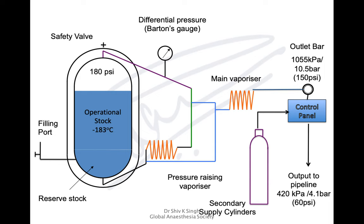The gases pass through a main vaporizer at very high pressure — around 1,055 kPa, 150 psi, or 10.5 bar — then are brought down using pressure regulators to 4 bar (about 60 psi) for output to the pipeline. This pressure reduction happens within the manifold room.